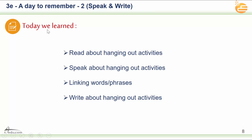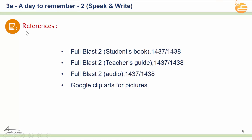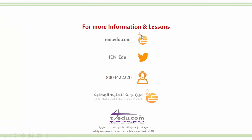This is the end of our lesson. Today we learned: number one, read about hanging out activities; number two, speak about hanging out activities; number three, linking words or phrases — first, after that, then, later; number four, write about hanging out activities. References used: Full Plus 2 student book, teacher's guide, audio, Google clip arts. For more information, visit the website, Twitter account, or the national education portal. Thank you all for being with me. I hope to see you next time. This is Sultan Shahrani. Goodbye everyone.